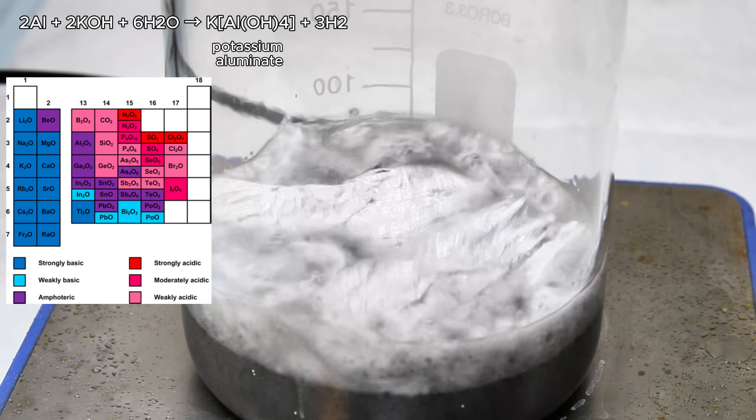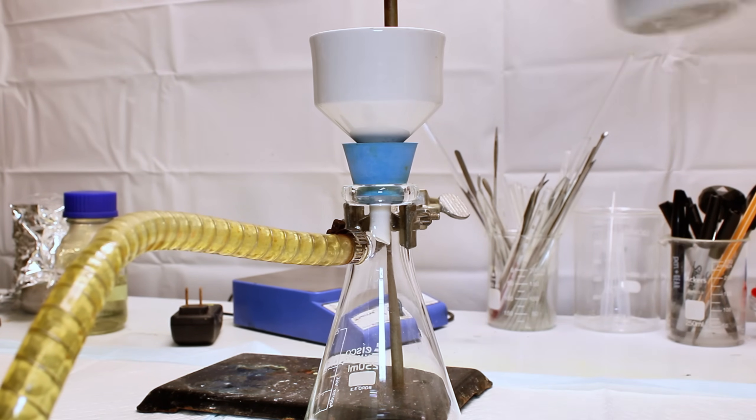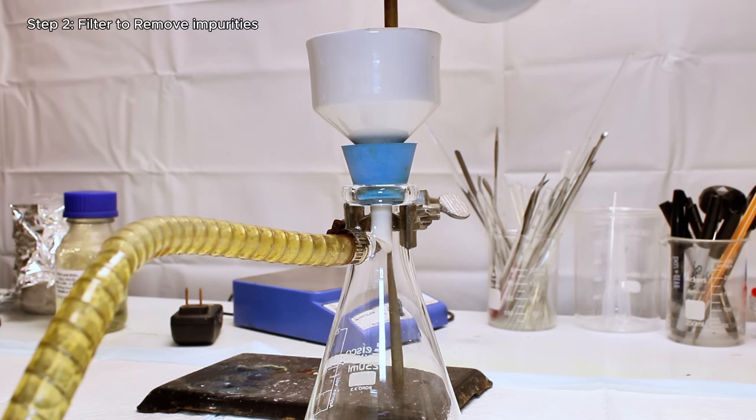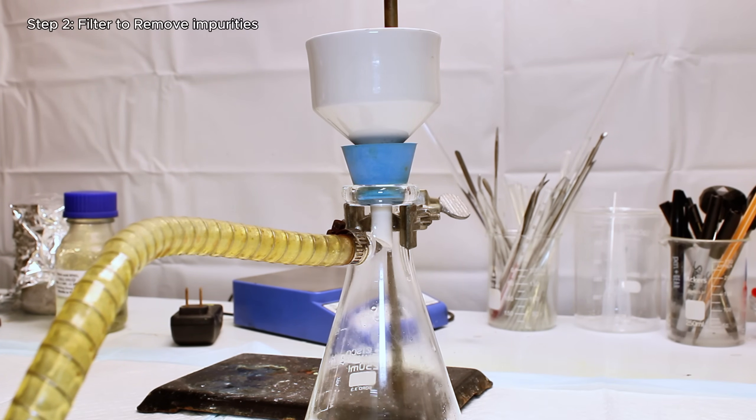Anyway, I go ahead and keep adding aluminum foil until no more dissolves, and then I leave this beaker overnight to allow it to clear up. When I came back the next day, I found that a layer of sediment had settled to the bottom of the beaker, which is likely undissolved potassium aluminate, as far as I can tell.